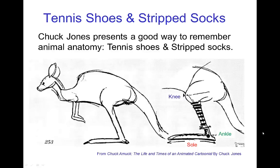Chuck Jones presents a nice way of remembering these different anatomical forms for animals, which is the sole, ankle, knee — just dressing the animal in tennis shoes and striped socks.